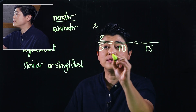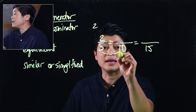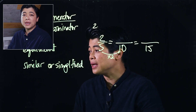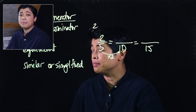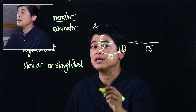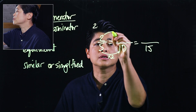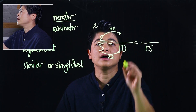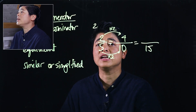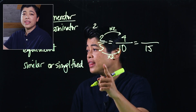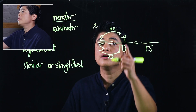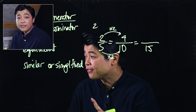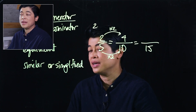To get from five to ten in the denominator, that's a times two. So if we multiply the denominator — the bottom — by two, we need to multiply the top by two as well. That makes it times two, so two-fifths is equivalent to four-tenths. They look different but they're actually the same.